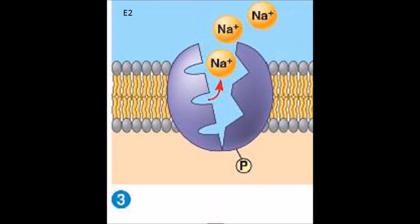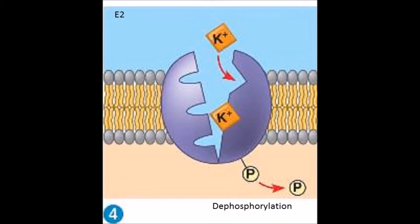The donation of the phosphate provides the energy for the protein to undergo a conformational change, which causes the protein to open to the outside and lose its affinity for the sodium ions. With nothing holding the sodium ions in place, they move out of the protein and into the extracellular matrix. The protein pump now has an affinity for potassium ions outside of the cell, and two of these ions can now enter the pump. This prompts the phosphate to detach, a process called dephosphorylation.